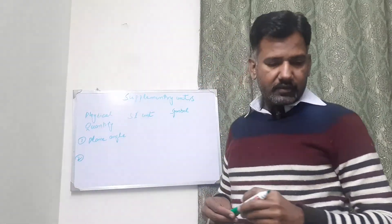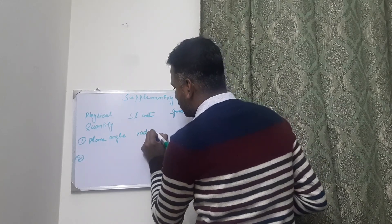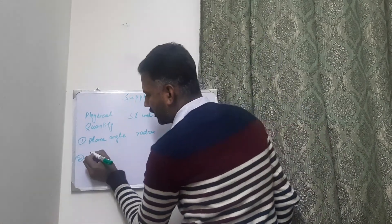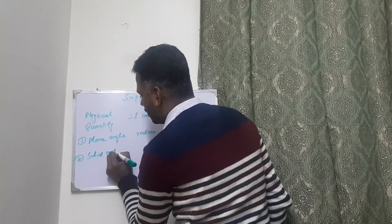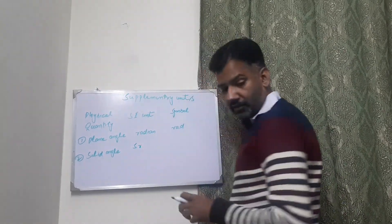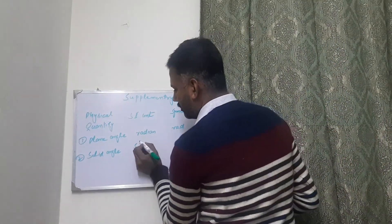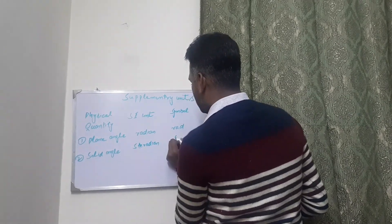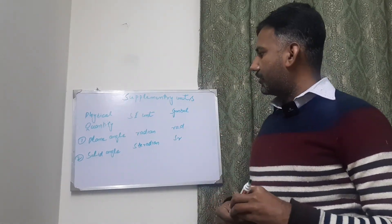The first one is plane angle, which has SI unit radian, and it is represented by the symbol RAD. And the second one is solid angle, and its SI unit is steradian, and it is represented by SR. So these are two supplementary units.